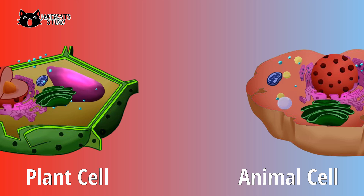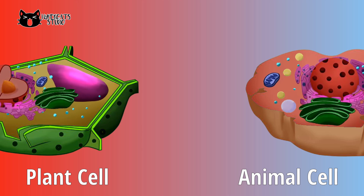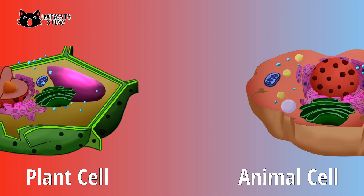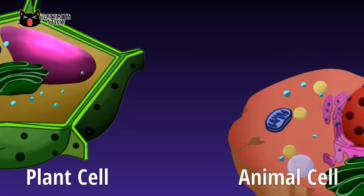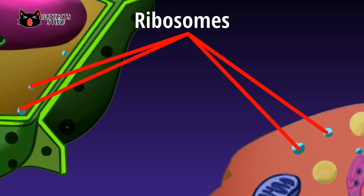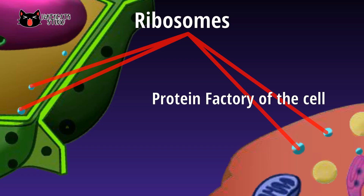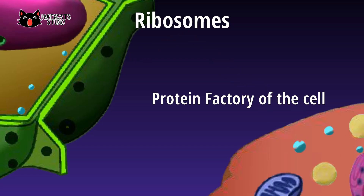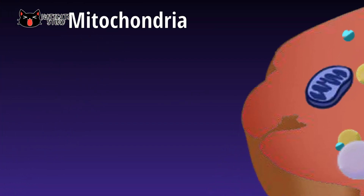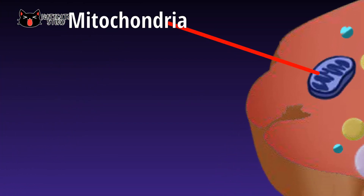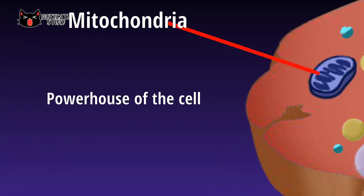Most organelles are present in both animal and plant cells, including the nucleus, mitochondria, Golgi apparatus, smooth and rough endoplasmic reticulum, and ribosomes. Ribosomes are tiny structures known as the protein factory — they manufacture proteins using RNA and amino acids. Mitochondria is a rod-shaped organelle that stores, transfers, and converts energy into adenosine triphosphate, or ATP.